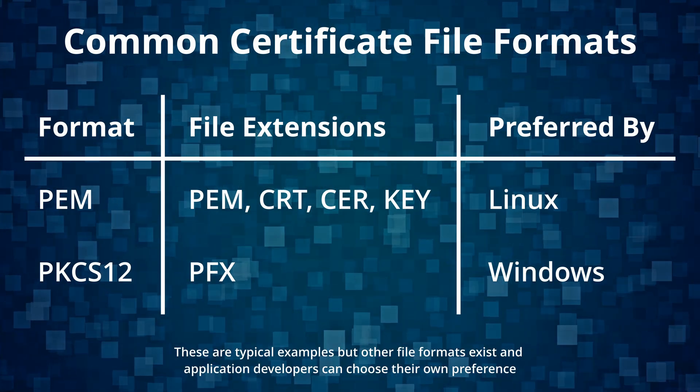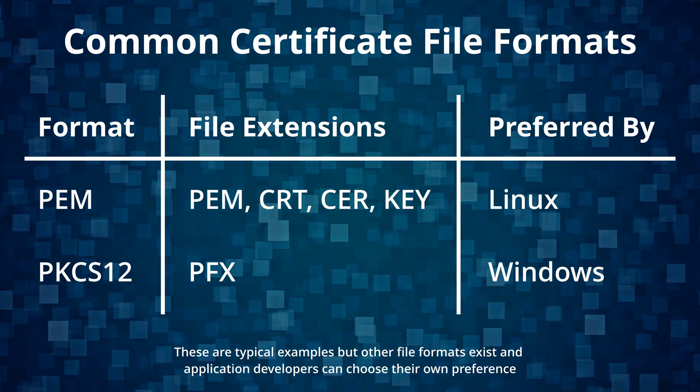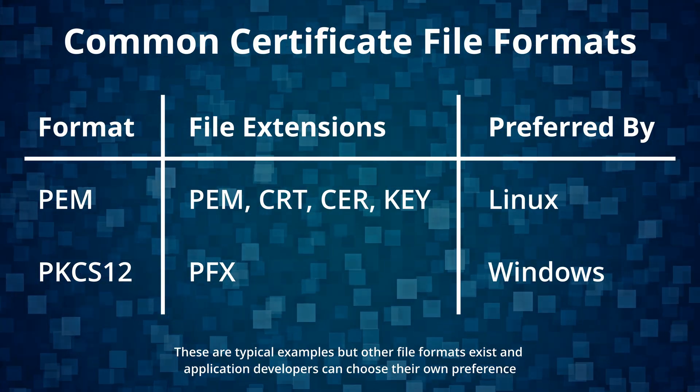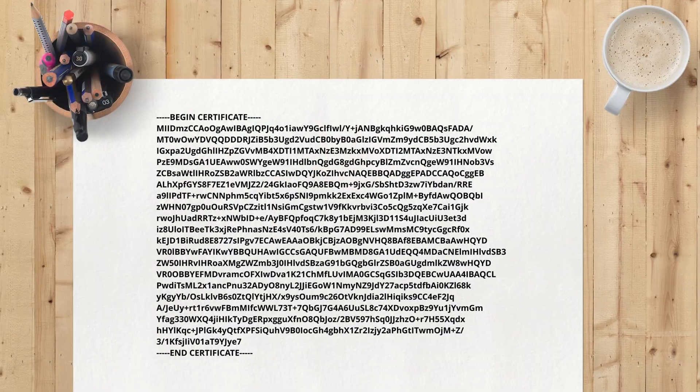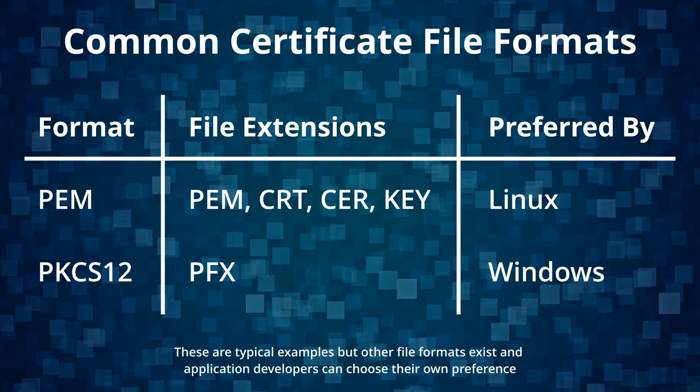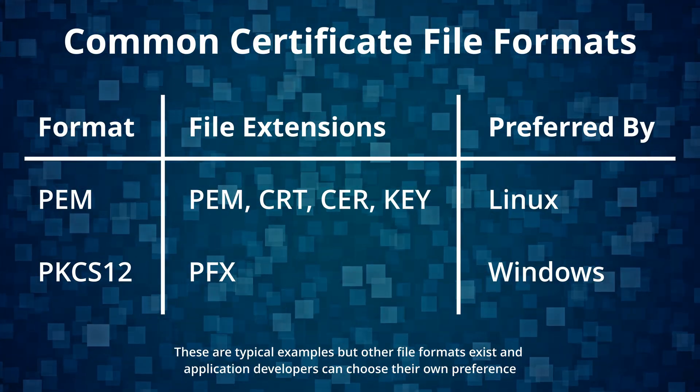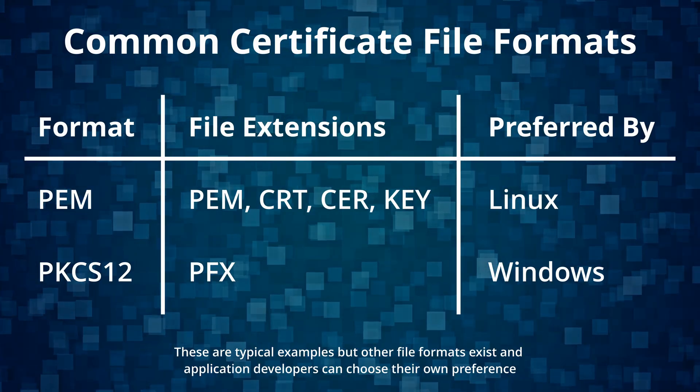Where this most often goes wrong is that people forget about the private key. The public key is easy — it's part of the certificate. The private key is usually kept separate. There are several ways to store SSL certificates in files but the two most common formats are PEM and PKCS12. PEM files have an extension such as PEM, CRT, CER, or KEY. They're stored in text form so you can open them with a text editor like Notepad. PKCS12 files use the PFX extension and they are binary files — you can't just open them in a text editor. With PEM you typically have a certificate file and a separate private key file, though it is possible to put both in the same file. PFX files include both the certificate and the private key, and they're encrypted to keep the key safe.